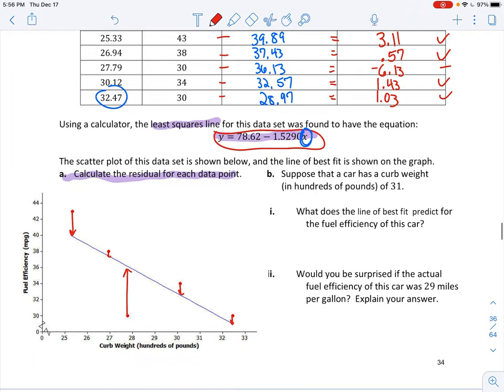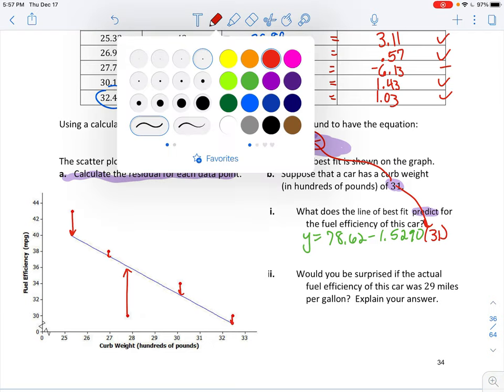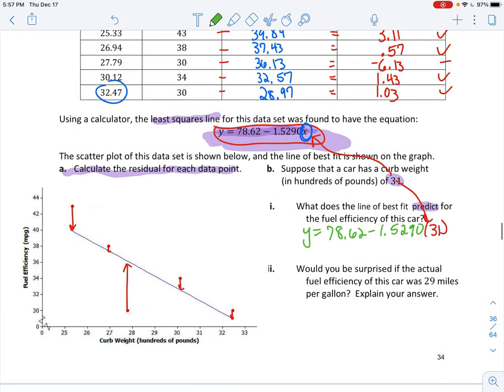So then I asked a question. I said, okay, suppose the car has a curb weight of 31. What does the line of best fit predict for the fuel efficiency? So it's asking us to predict. So we have to go back and use this equation. And wherever I see an x, I have to plug in a 31. So let's do that. Y equals 78.62 minus 1.5290, and then in parentheses, we're plugging in that 31. All right, when you pop that into your calculator, it gives me 31.22.